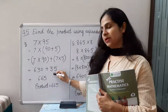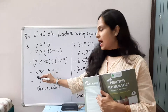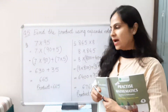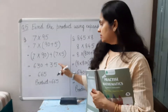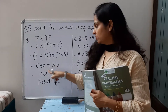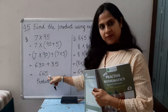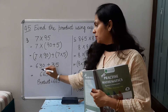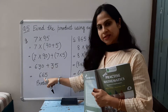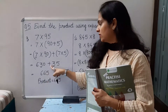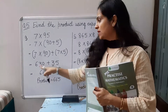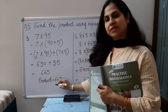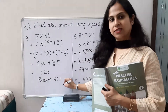We will add these two numbers — we can add them horizontally as well. 5 plus 0 is 5. On the tens place, 3 plus 3 is 6. There is no number on the hundreds place, so we write 6. So our product is 665.